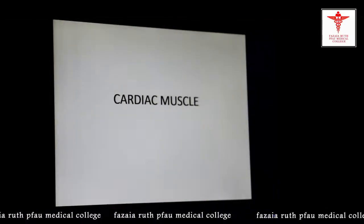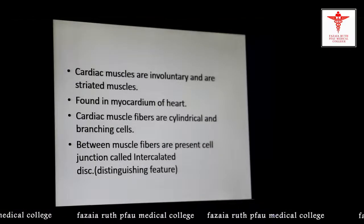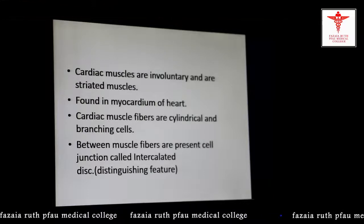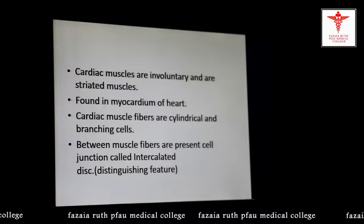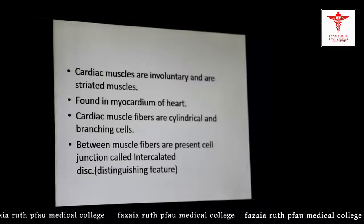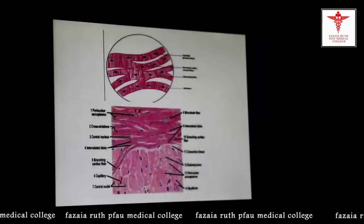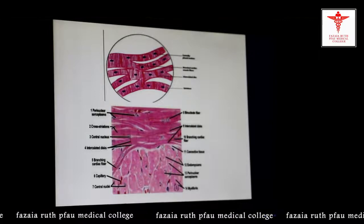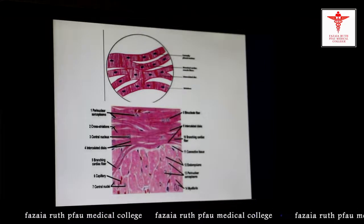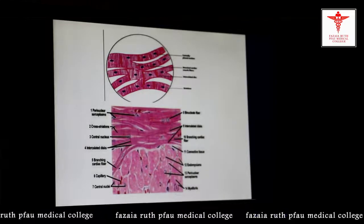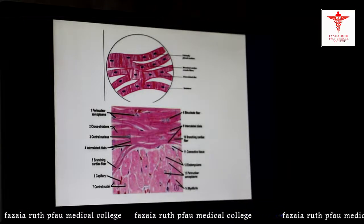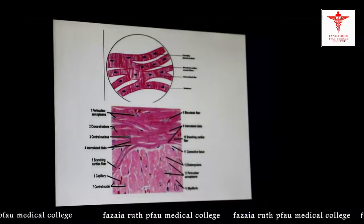Cardiac muscles are involuntary and striated muscles found in the myocardium of the heart. They are cylindrical in shape and show a branching pattern. Between the muscle fibers, there is a cell junction called the intercalated disc, which is a distinguishing feature of the cardiac muscles helping differentiate them from skeletal muscle and smooth muscle. In this diagrammatic picture, cardiac muscles are shown as cylindrical in shape with a short branching pattern, striated in appearance due to the presence of actin and myosin filaments, with a centrally placed nucleus — and sometimes binucleated fibers are also seen — and intercalated discs.